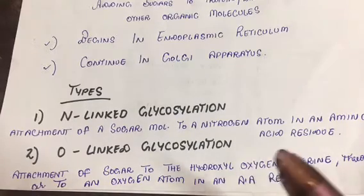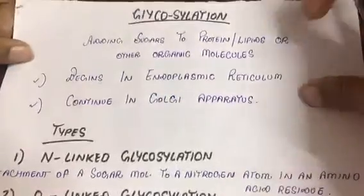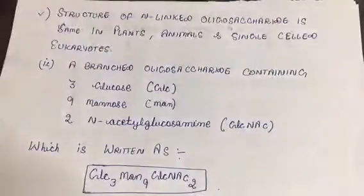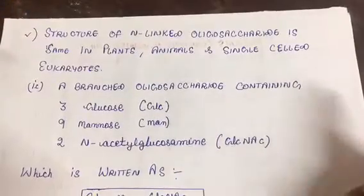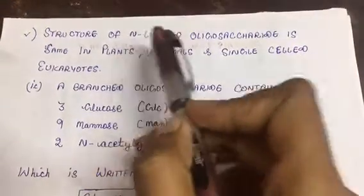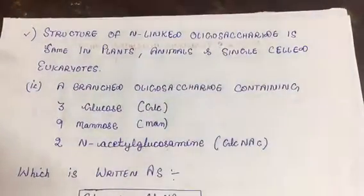If we talk about the structure of N-linked oligosaccharide, it is same in plants, animals, and single-celled eukaryotes.